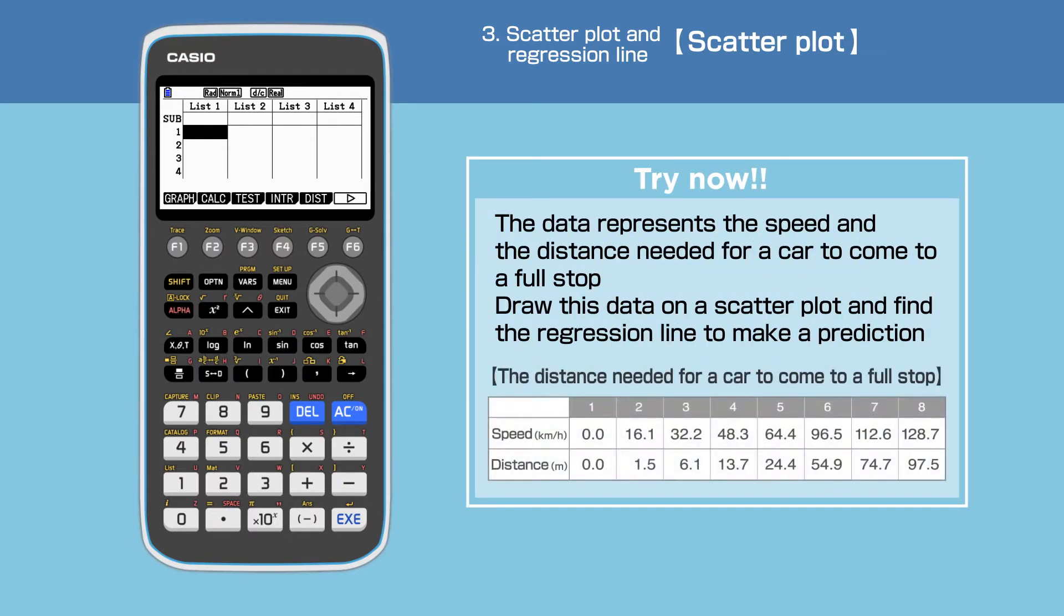Let's look at the example question for this video. Question: The data represents the speed and the distance needed for a car to come to a full stop. Draw this data on a scatter plot and find the regression line to make a prediction.